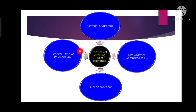The third feature is that the creditor is free of payment risk. As the drawee bank has provided its payment guarantee confirmation by avalizing that bill, the drawee bank is liable to make the payment. So here the creditor — or the drawer — gets payment confirmation from the drawee bank, meaning the drawee bank will have to make the payment and the creditor is free of risk. If the bill is not avalized, it is possible that the drawee does not make the payment on maturity date.